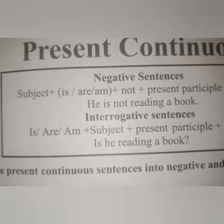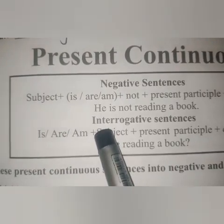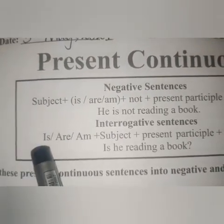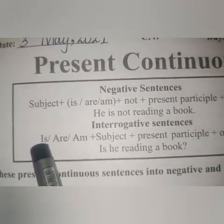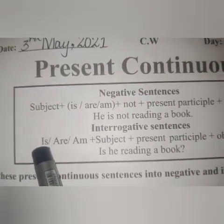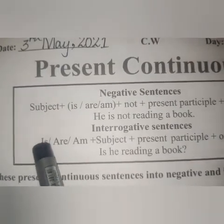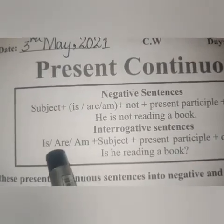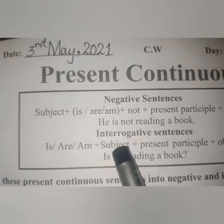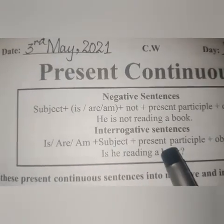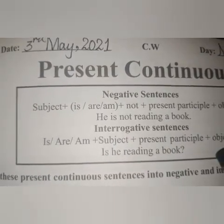Now we are going to make interrogative sentences. Firstly, you see here is the structure of an interrogative sentence: is, are, or am — the helping verb — then subject, then ING form of verb, and at the end the object.